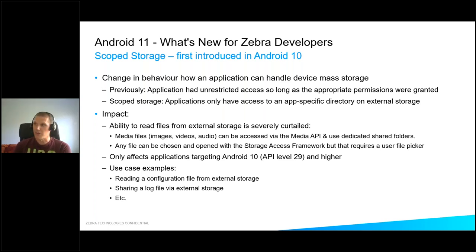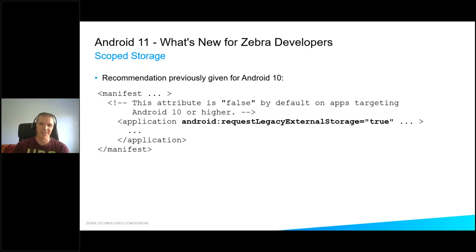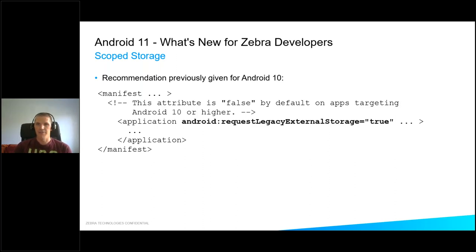Those kinds of security loopholes — where a nefarious application could intercept or modify a configuration file before it gets to the application — are being closed with scoped storage. What most people are more interested in is what they can do about it as an application developer. The recommendation in Android 10 was to use the requestLegacyExternalStorage flag, and pretty much every developer used that. This flag would make your application work as though scoped storage wasn't a thing — essentially kicking the can down the road. Unfortunately, the flag will not work in Android 11, so it is necessary to make some change to your application.